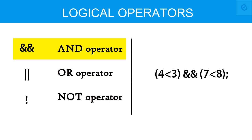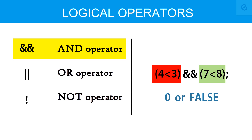If we change the greater than sign and write four is less than three, that relation is false and the whole statement goes false — the logical AND returns zero or false as the result. So basically for logical AND, both of the conditions are required to be true.